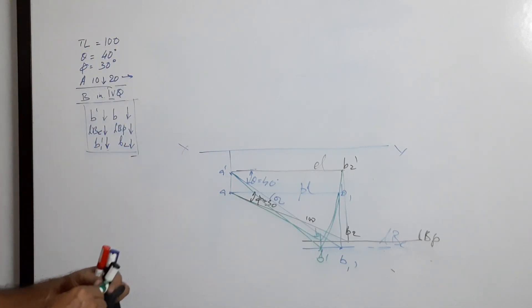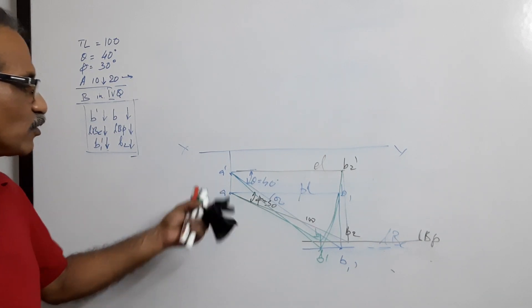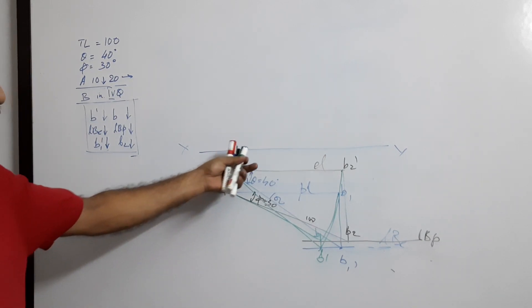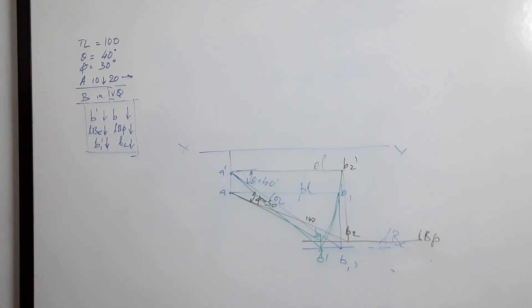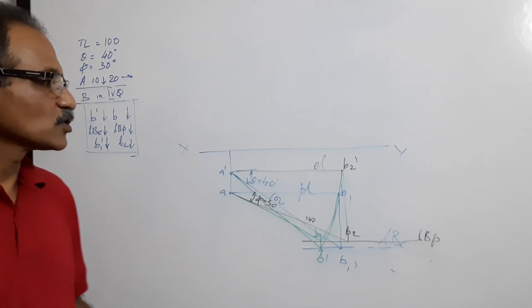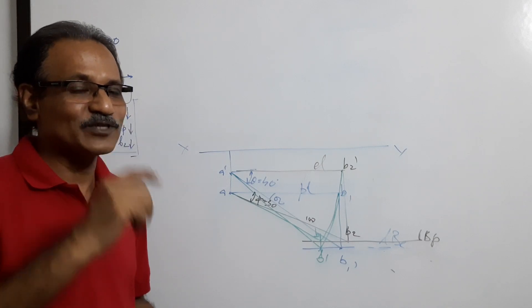You know how to find the traces. And also, you know how to mark alpha and B2. So we have seen, in fact, 16 questions.